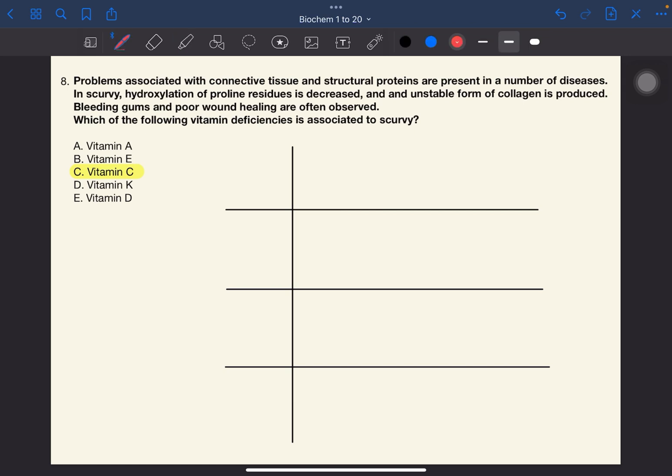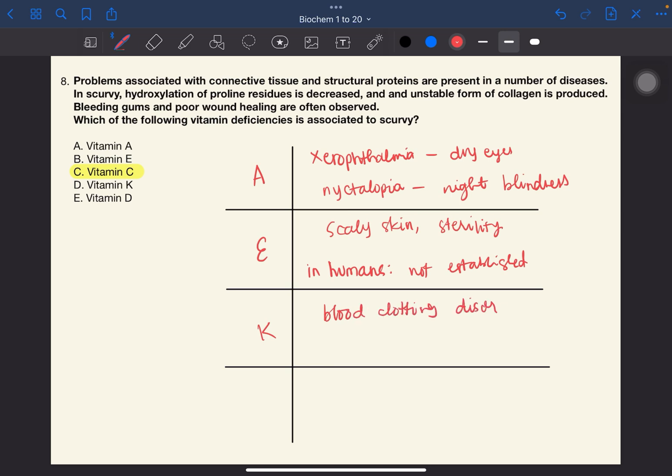For the other choices, when you're deficient in vitamin A, you will have xerophthalmia and nyctalopia, which means dry eyes and night blindness. For vitamin E, that's actually in lab animals, scaly skin, sterility. For vitamin K, you'll have blood clotting disorders and in neonates specifically, hemorrhagic disease of the newborn. And for vitamin D, rickets in children and osteomalacia in adults.